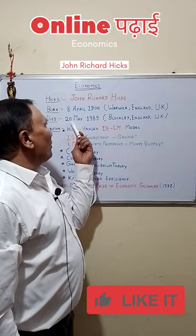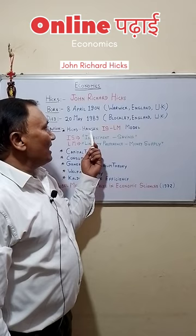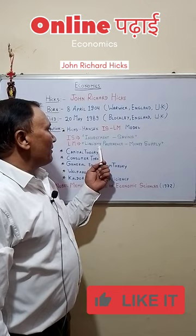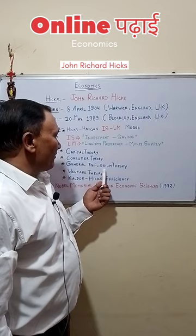His contributions include the Hicks-Hansen IS-LM model — IS standing for investment saving, and LM for liquidity preference money supply — as well as capital theory, consumer theory, general equilibrium theory, welfare theory, and Kaldor-Hicks efficiency.